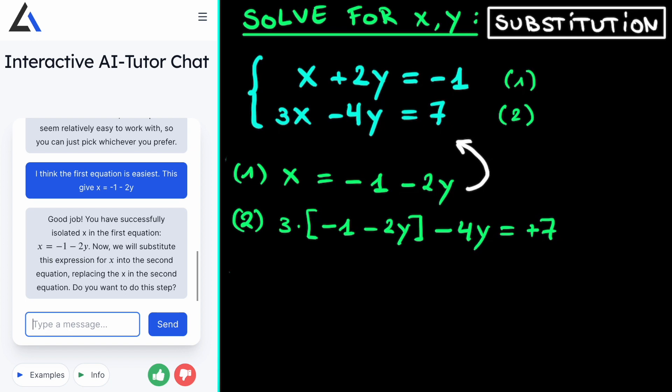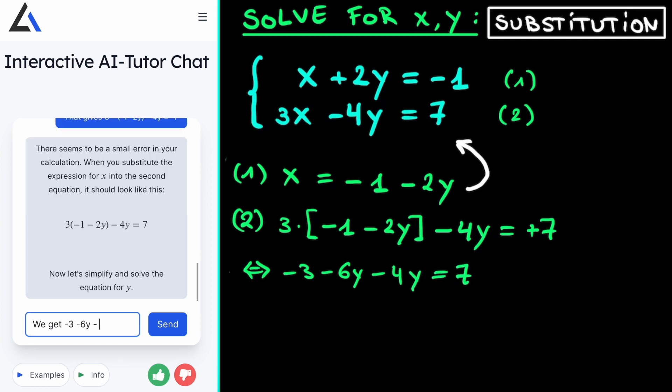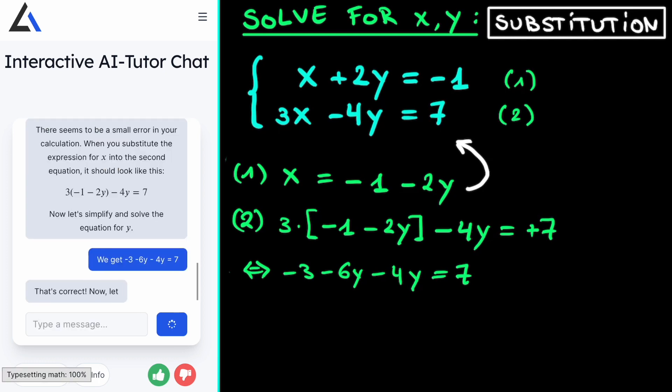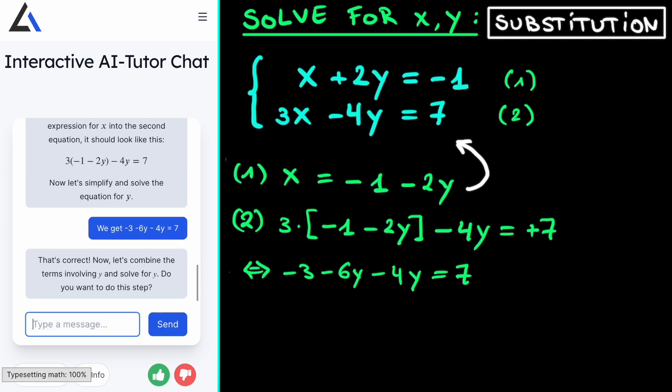Then it asks us to simplify this equation for y. So then we just simplify this. This becomes minus 3 minus 6y minus 4y is equal to 7. So we fill this in the AI Tutor and it says that this is indeed correct and that we now have to solve this equation for y.